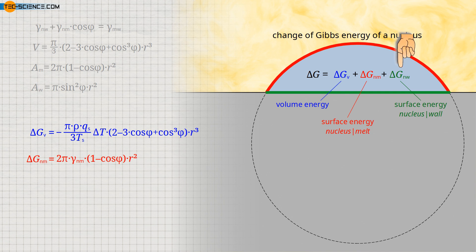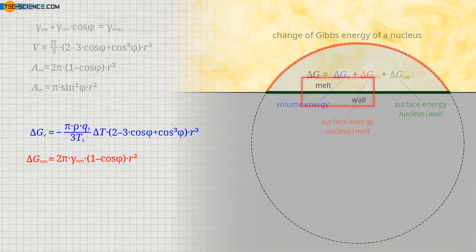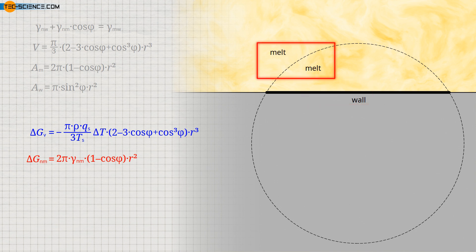The third term accounts for the change in surface energy as the nucleus forms on the wall. It is essential to note that, due to the different substances involved, there is already a surface energy between the melt and the wall before nucleation. This was not the case in the homogeneous scenario, since the interface between melt and melt has no surface energy — it is the same phase. The surface of the solid nucleus therefore had to be created from nothing, so to speak.